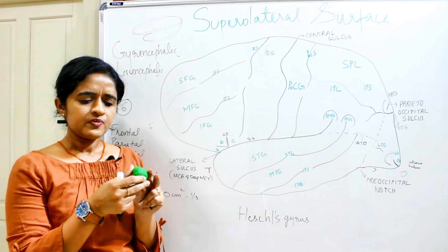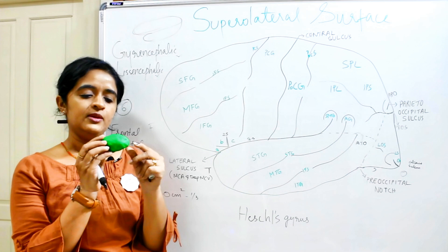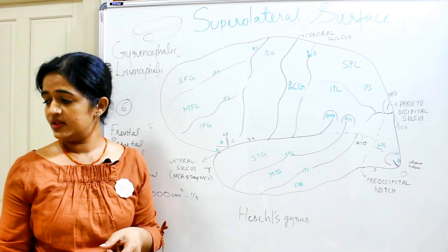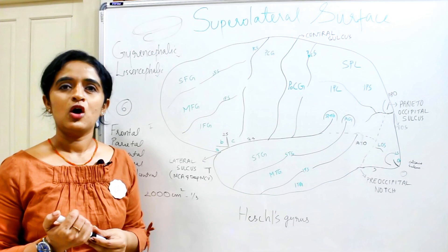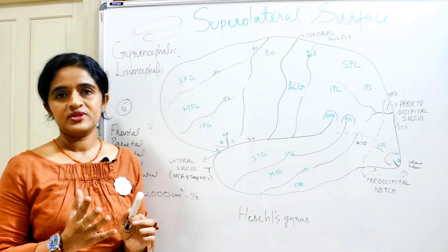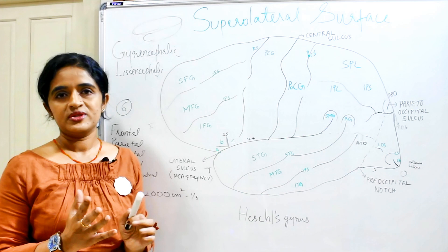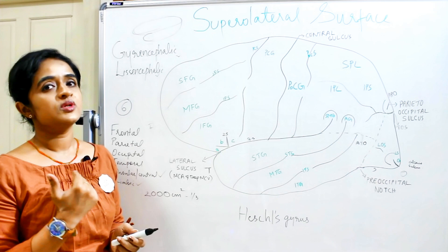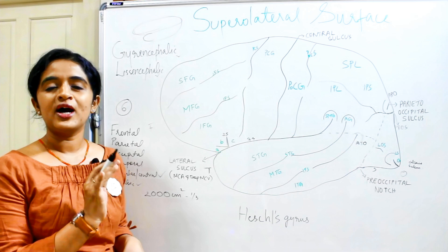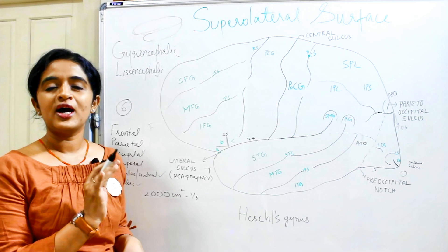The frontal pole is somewhat rounded and the occipital pole is somewhat tapering. When asked about the lobes of the cerebral hemisphere, most students say frontal, parietal, occipital, and temporal — but there are actually six lobes. The two additional lobes are the insular (or central) lobe and the limbic lobe. Writing all six lobes will get you full marks, as most students mention only four.